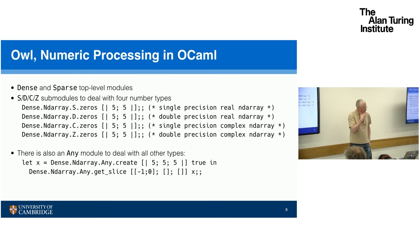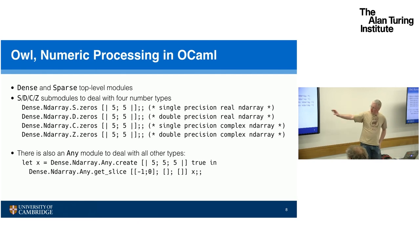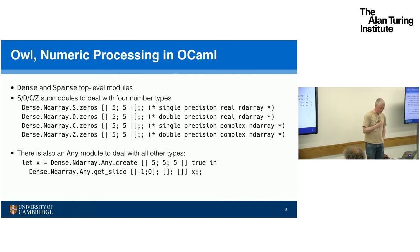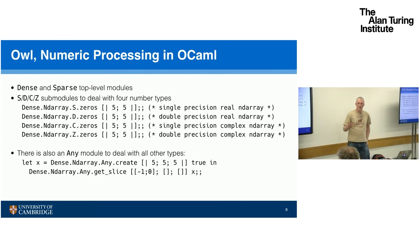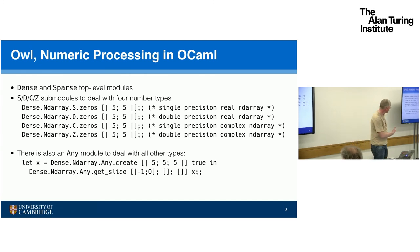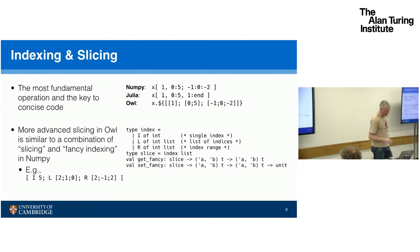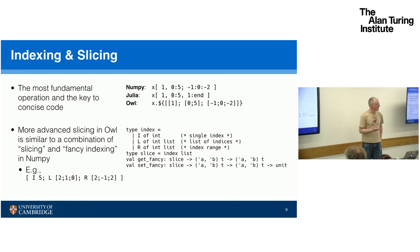What does some code look like? The NDArray is the underlying data structure. There are four variants: single and double precision real numbers and single and double precision complex numbers, plus an 'any' model to deal with anything else. You can create, in this case, a five-by-five-by-five matrix of Booleans indicated as true, and then take slices or rows out of that. Hopefully it's not too dissimilar to people familiar with using MATLAB and other such environments. One of the common complaints about using languages like OCaml is the syntax looks weird — hopefully it's not too bad.